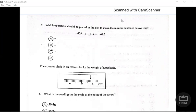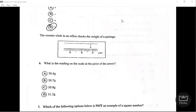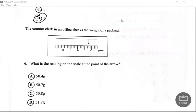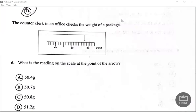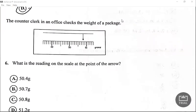That one is pretty straightforward. Let's look at this one. I'll zoom in. The counter clerk in an office checks the weight of a packet. What is the reading on the scale at the point of the arrow? It's right here that we need to find.